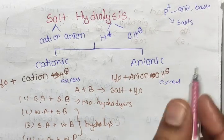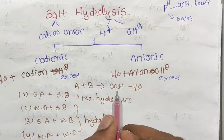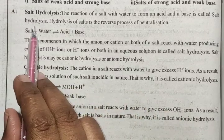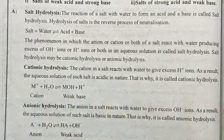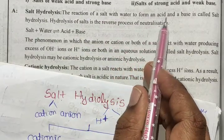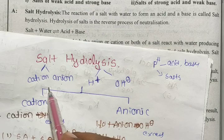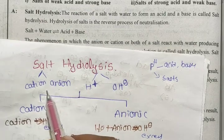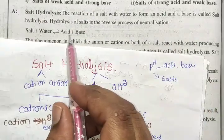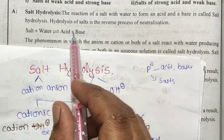Acid plus base react; salt plus water is produced. Hydrolysis means the reaction of salt plus water to form an acid and base. Water and salt react to give acid and base. This is neutralization in reverse.